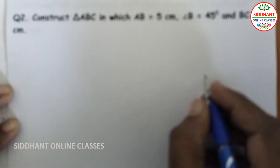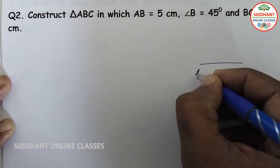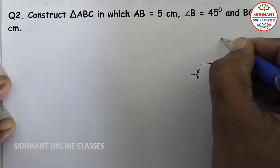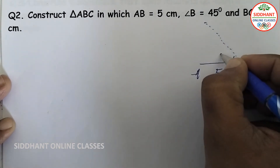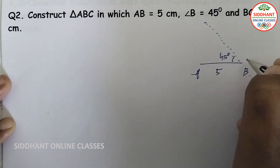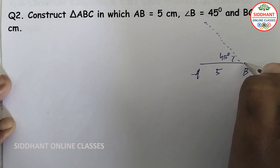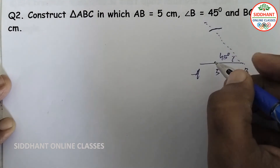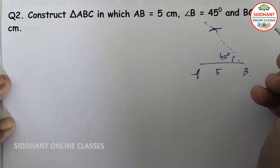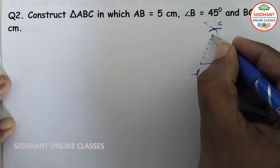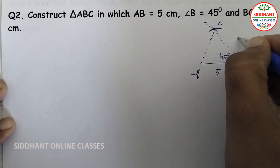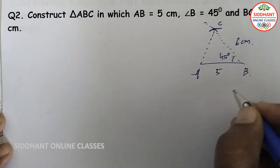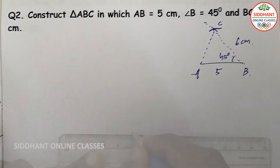Question number two: Construct Triangle ABC in which AB is equal to 5 centimeters, Angle B is 45 degrees, and BC is equal to 6 centimeters. For the rough diagram: this is AB with 5 centimeters; from B we draw an angle of 45 degrees with a protractor, then take a measurement of 6 centimeters from point B to get an arc and find point C. We join points A and C to get a triangle. This is 6 centimeters, this is 45 degrees, this is 5 centimeters.